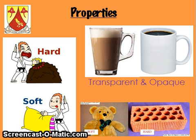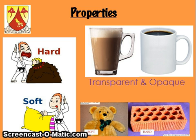Then hard and soft — those are easy, you know what those mean. Hard means it can't be scratched easily, and soft means it can be scratched easily, or you can push on it and it would give way. A teddy bear is soft and a brick is hard.